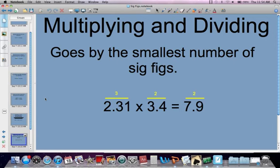Finally, when you get to multiplying and dividing, it always goes by the smallest number of sig figs. 2.31 x 3.4: this has three sig figs, this has two sig figs, so your answer can only have two sig figs.